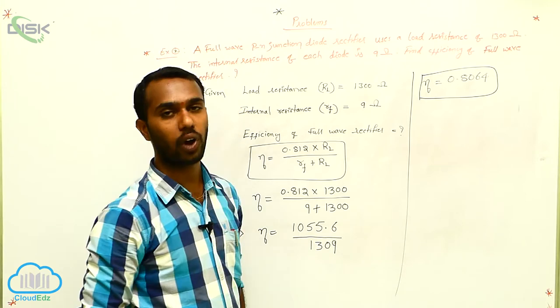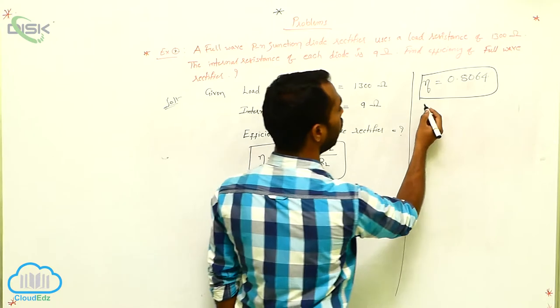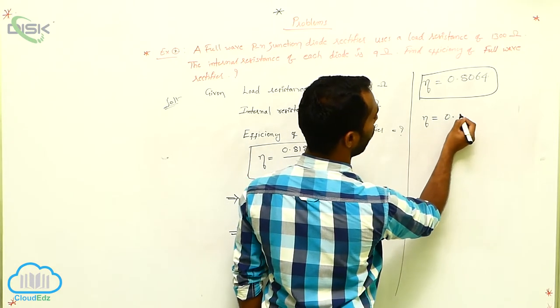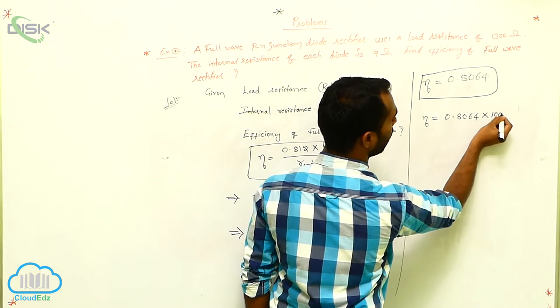How much percentage? In percentage, what we have to do? In percentage, we have to multiply with 100. So, eta is equals to 0.8064 into 100.